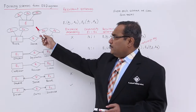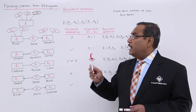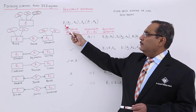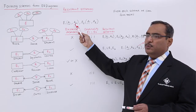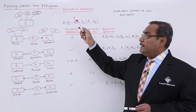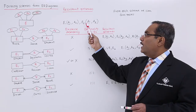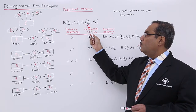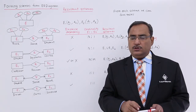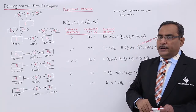The first case: suppose there is one entity E having A1 as the prime attribute, A2 as a non-prime attribute, and A3 as a multivalued attribute. From this entity, two schemas will be formed. E1 will have A1 as the prime attribute and A2 as a non-prime attribute. A3 will get separated and form another schema E2 with attributes A1 and A3, where A1 is the partial key and E2 is the weak entity set.